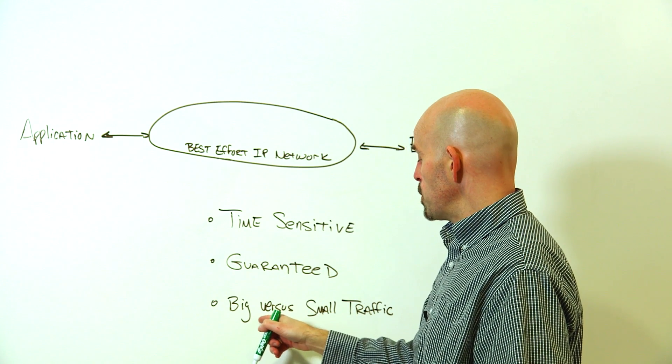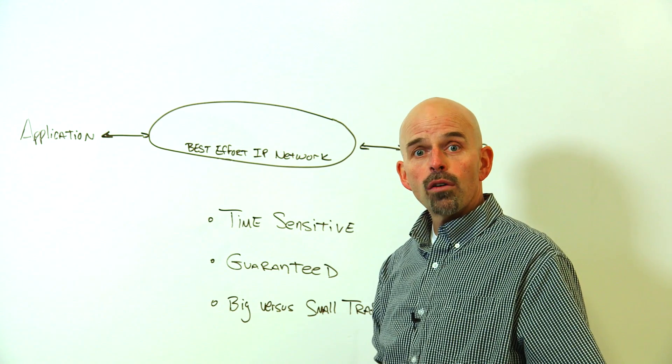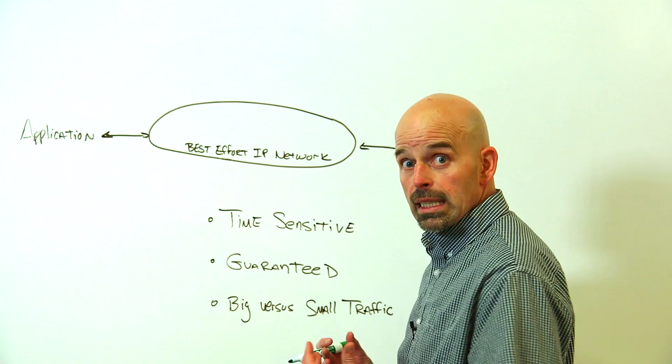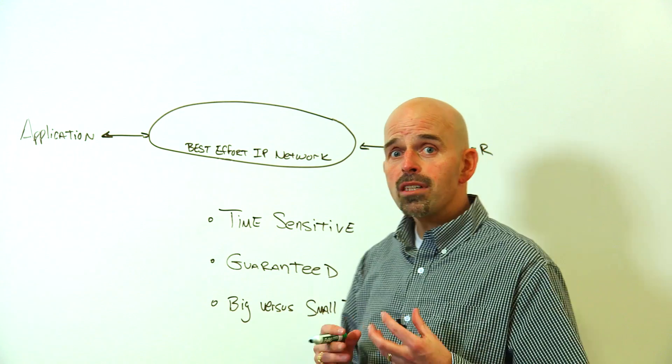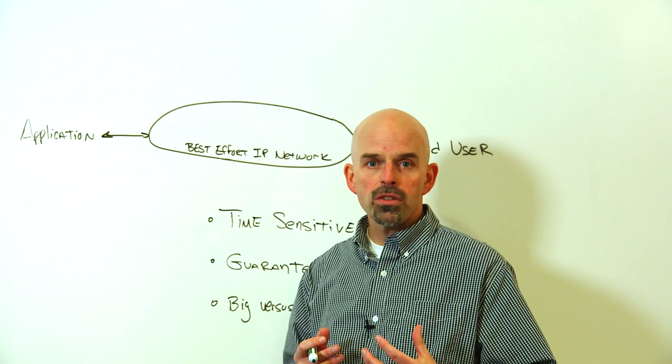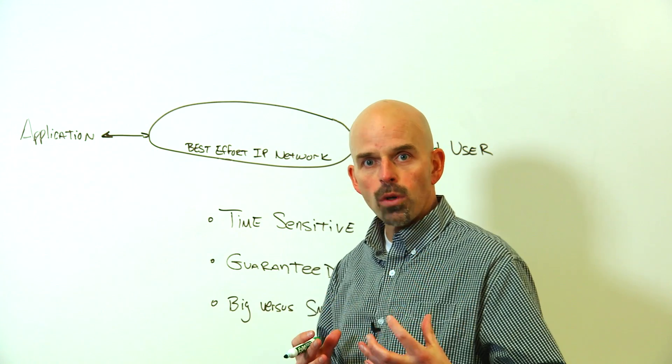Being able to differentiate between big versus small traffic, video versus audio versus data, time sensitive data versus large data versus guaranteed data. The application has these wants and needs of the network, but the network currently cannot support those wants and needs. The application is disjoint from the network.